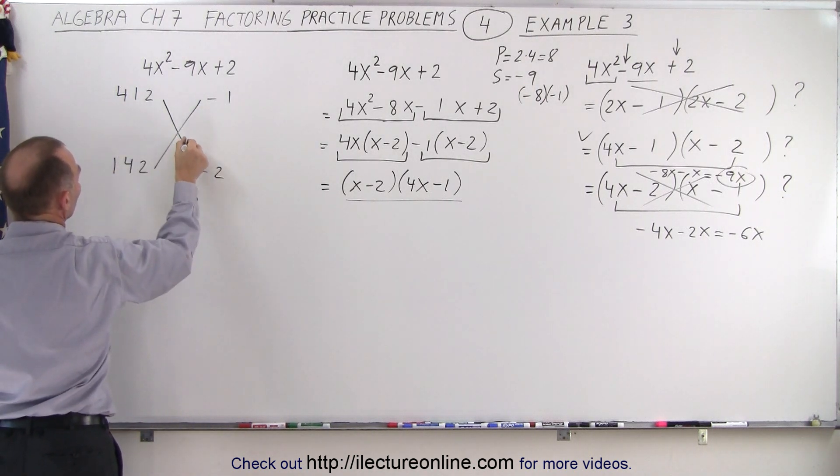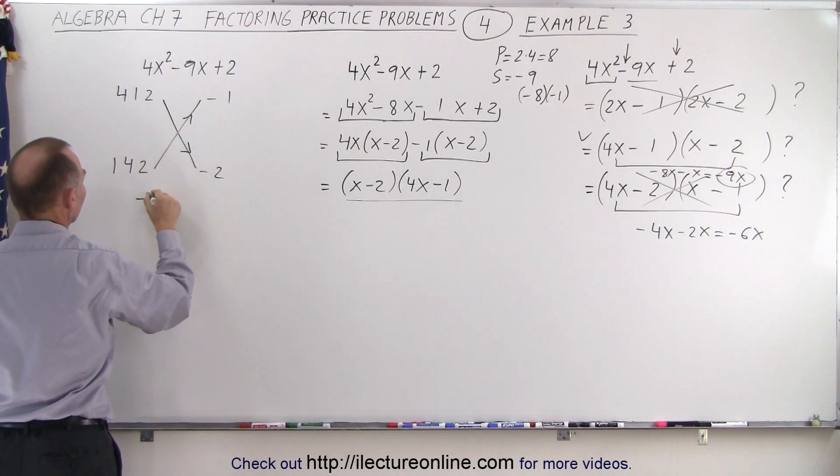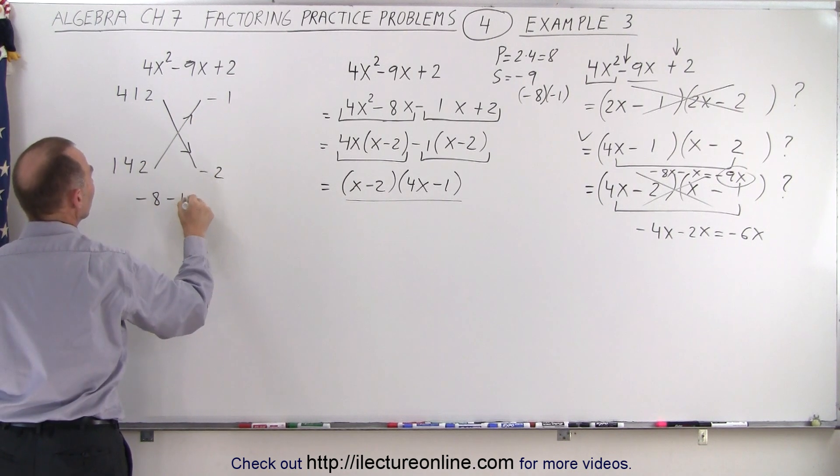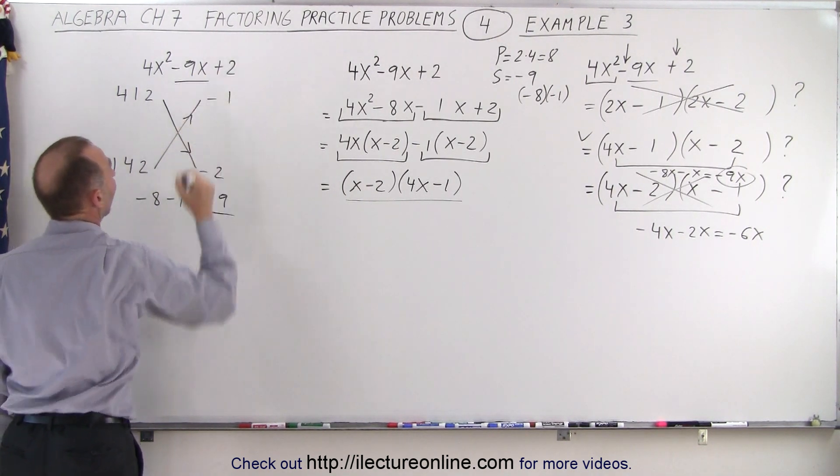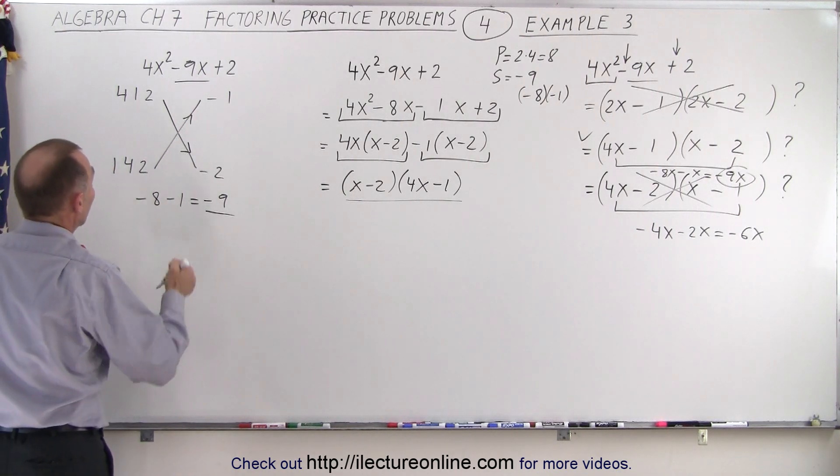So let's see if we get this correctly. 4, and of course we FOIL across like this, so 4 times negative 2 gives us negative 8, and 1 times negative 1 gives us negative 1. Together it's minus 9. Wow! First try, I get the right result. I got lucky on this one, because if I had tried, for example, another one...